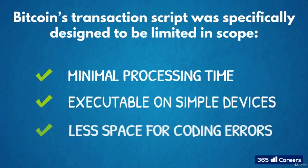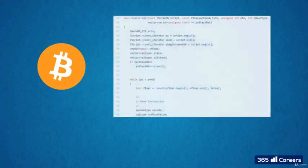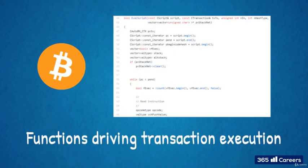Its limited scope also enhances security, because this leaves less space for coding errors. As you can imagine, any errors in the system which processes money transfers can be quite costly. Bitcoin's transaction script includes functions that drive transaction execution.